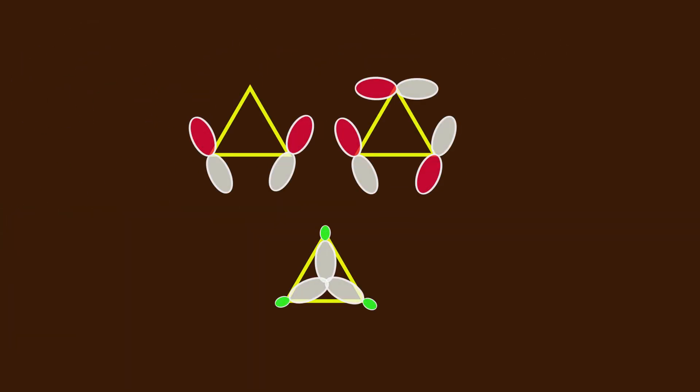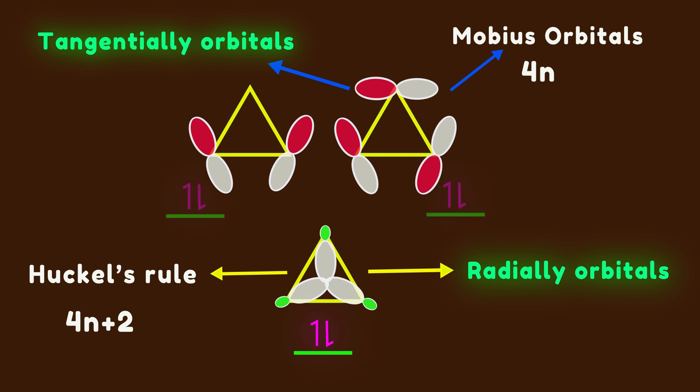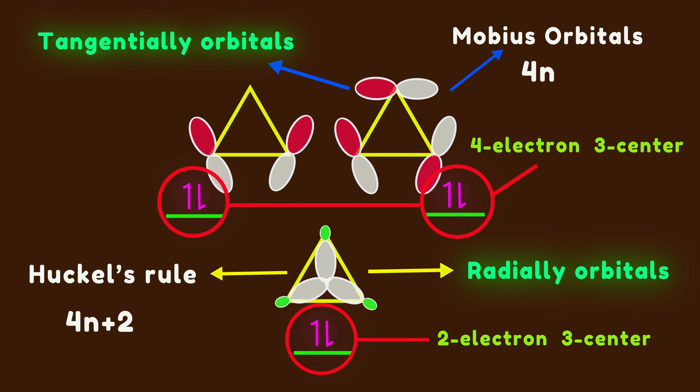Let's take a look at the Walsh diagram of cyclopropane. In this diagram, we deal with two types of orbitals: radial orbitals directed toward the center of the ring, and tangentially oriented p orbitals. Radial orbitals always follow Hückel's rule, while tangential orbitals form a Möbius system, so are occupied by 4N electrons. In this regard, we can describe cyclopropane as a non-classical two-electron three-centers and four-electron three-centers compound.